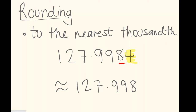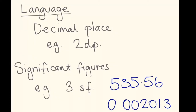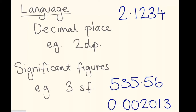And that's rounding to the nearest tenth, hundredth and thousandth. Now all you need to know is the language used around these types of questions. Sometimes it might ask you to round to a certain decimal place. For example, it might ask you to round to two decimal places. And you might be given a number like 2.1234.